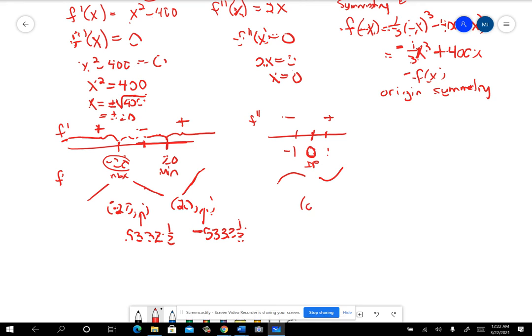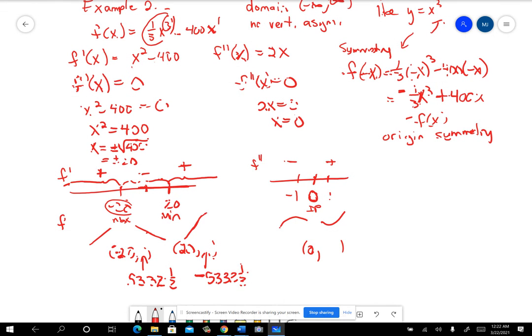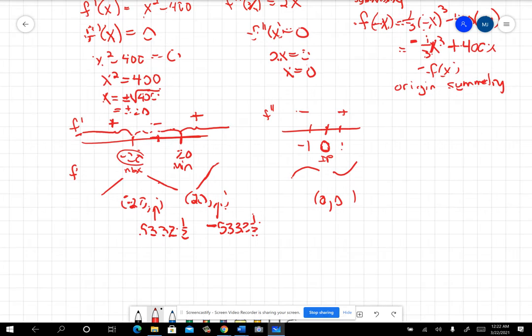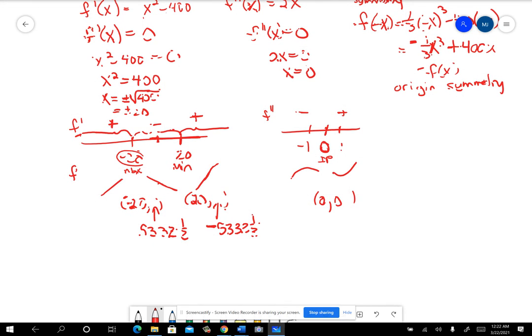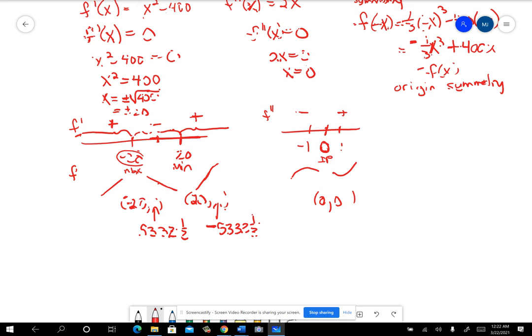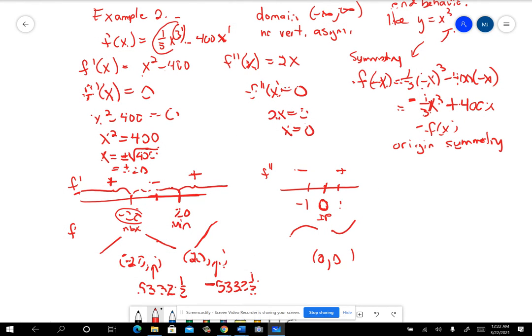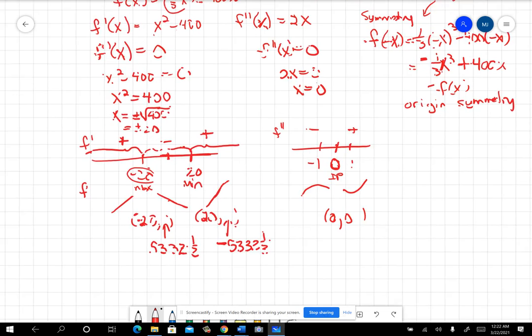And I'm going to need the y coordinate of that. But when you go back to the original and you plug in a zero, you're just going to get zero. So there's an inflection point at zero, zero. So we already know a whole lot about the function. We really can just go ahead and do a sketch right there. But one more thing we might want to know are the intercepts.